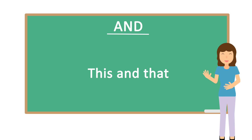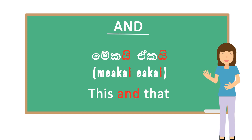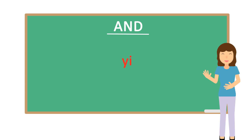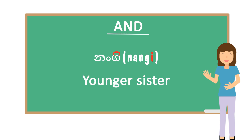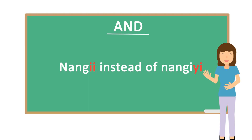How do you say 'this and that'? The word for 'this' is MAKA and 'that' is EKA. So MAKAI, EKAI means 'this and that.' But you can use the I sound only if the word ends with a vowel. If the word already ends with the sound I before adding AND, look at this word: NANGGI, which means 'younger sister.' This word ends with the sound I. So if you say 'the younger sister and the cat,' it would be NANGGI PUSAI. But it's a bit difficult to pronounce two I sounds, so we normally pronounce this with the long sound of I — like NANGGI PUSAI. If the word already ends with the I sound, we just say the long I sound.